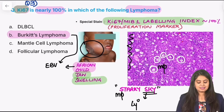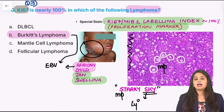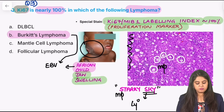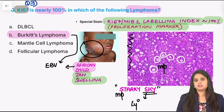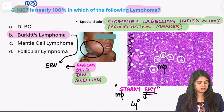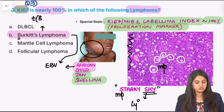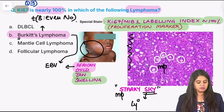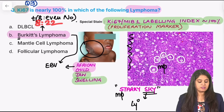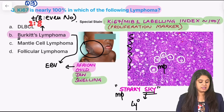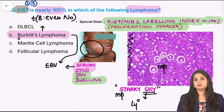Ki-67, also known as MIB-1, is a proliferation marker indicating how much the tumor is dividing. Nearly 100 percent means it's a highly proliferative tumor. The translocation for Burkitt's lymphoma: chromosome 8 with any even-number chromosome — translocation 8;14, translocation 8;22, or translocation 2;8. Chromosome 8 with any even-number chromosome is Burkitt's lymphoma.